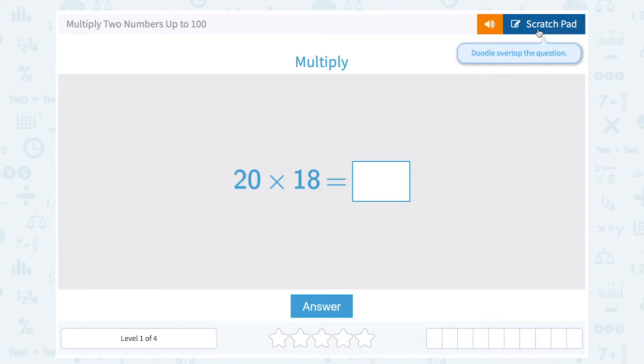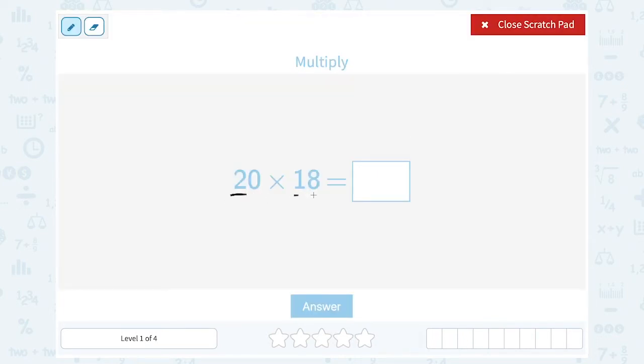So I'm thinking of this as two times 18. Well, two times 18 would give me 36, and then I'm going to put the zero on that. So that's going to give me 360 altogether.